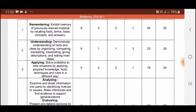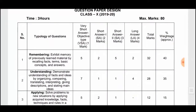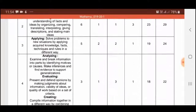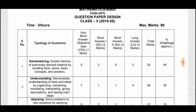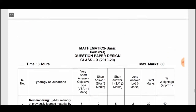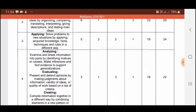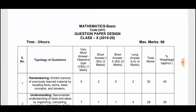They have done changes in remembering and understanding only. In the short answer section (three-mark questions), in Standard there are only two remembering questions, whereas in Basic there are five questions of remembering for three marks. So this type of change they are going to do — this means the Basic paper will be far easier than Standard. You can clearly see the difference in remembering and understanding categories between Basic and Standard.